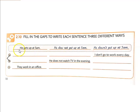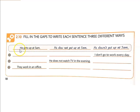So for example, get the positive sentence: He gets up at 5 a.m. Why is there an S at the end? Because this is third person singular — he, she, it. He gets up at 5 a.m.